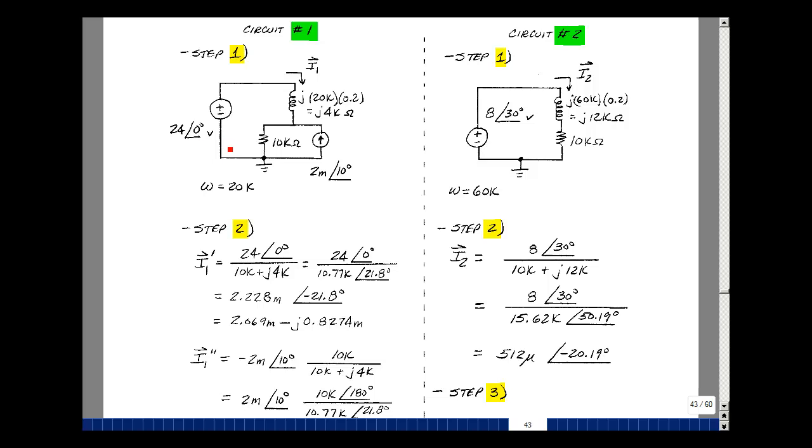Now let's set this source equal to zero, and let's find the current in this element due to this source. So shorting this, okay, then I've got a current divider. The current would divide this way and then this direction. So the current I1 would be the negative of 2 milli at angle 10 degrees, and then let's use our impedance current divider. So I'll take the other impedance over the sum of the two. So I want the current in this impedance. I'll take the other one, 10k over 10k plus j4k.